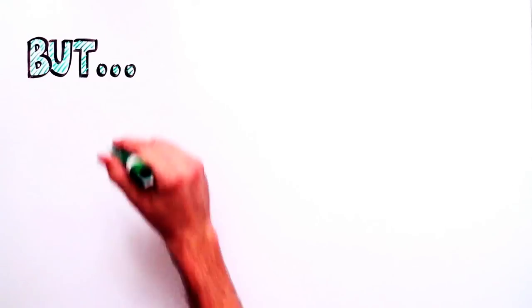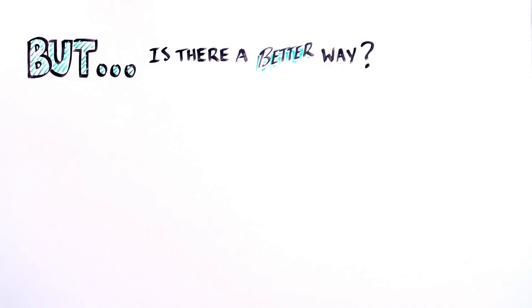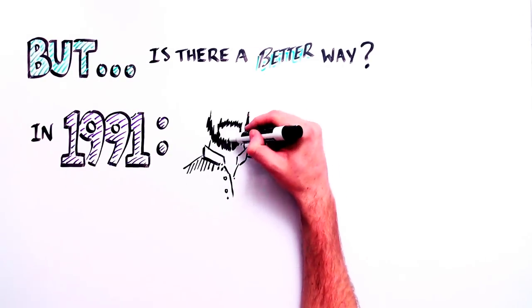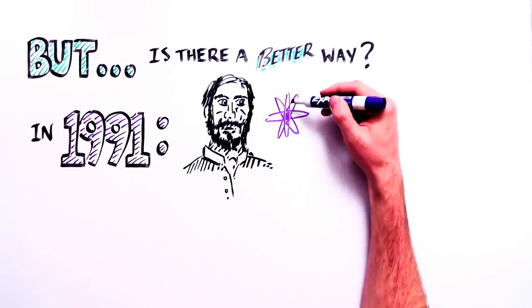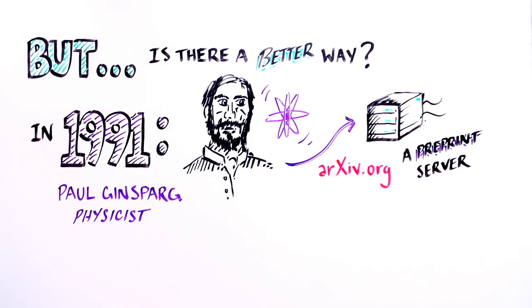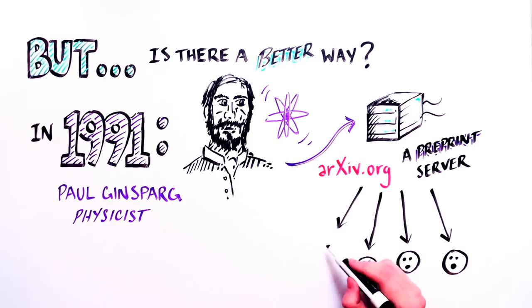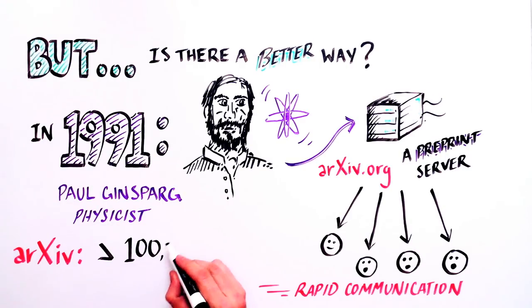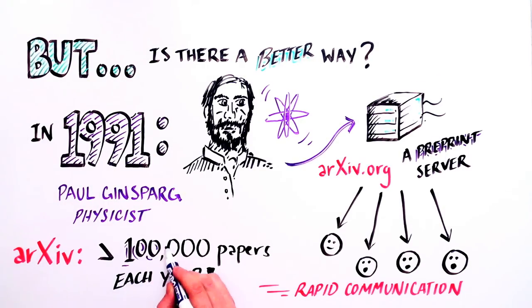Are there better ways biologists can share information? Biology may learn a thing or two from the physicists. In 1991, Paul Ginsparg revolutionized communication among physicists by producing a preprint server called arXiv that allows for rapid communication among scientists. arXiv now posts more than 100,000 papers each year.